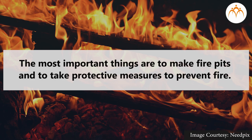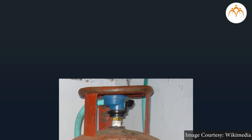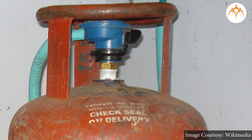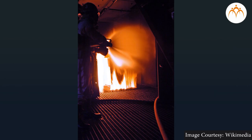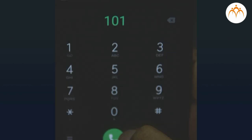For safety purposes, we should switch off the gas cylinder regulator when it is not in use. Switch off all lights and electrical appliances when leaving the premises. We all need to get into this habit. When there is a fire, we should call people for help and inform the fire brigade as soon as possible.